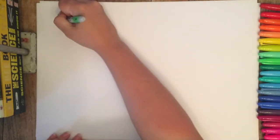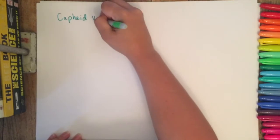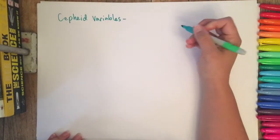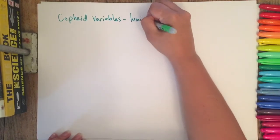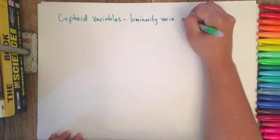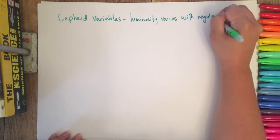So this video is about variable stars, specifically Cepheid variables. These are stars where when they're observed their luminosity varies, and it varies with a very regular period.